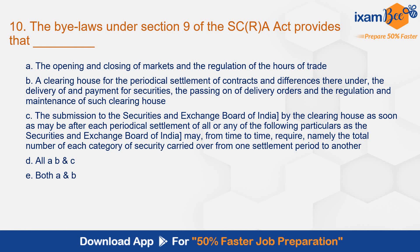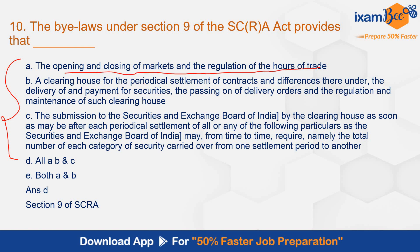Question number 10: The bylaws under section 9 of SCRA provide that — the correct answer is option D, all of the above. Bylaws provide all of these provisions. The bylaws are made by the stock exchanges as per section 9 of SCRA. The bylaws mention: opening and closing of markets and regulation of hours of trade; clearing house for the periodic settlement of contracts and differences thereunder; delivery of and payment for services; passing of delivery orders and regulation and maintenance of such clearing house; and submission to SEBI by the clearing house of all or any of the particulars as SEBI may from time to time require.